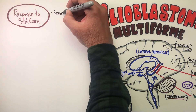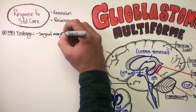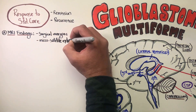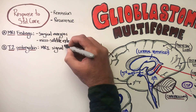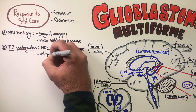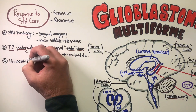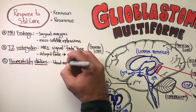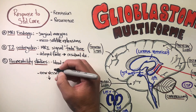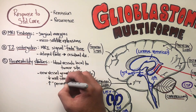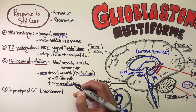I wanted to include a section on how to interpret the response you're getting from standard care, whether we're seeing prolonged remission or recurrence. MRI of the brain is your standard imaging tool. Focus on surgical margins and microsatellite extensions — these are small areas of recurrence that will be evaluated. T2 prolongation is when the MRI signal fade is delayed, indicating possible residual disease. There are also permeability studies done — when recurrence occurs, small initial blood vessels develop around those sites of regrowth. Those vessels are delicate, fragile, and more permeable, and increased permeability locally around the surgical margins indicates possible residual disease.